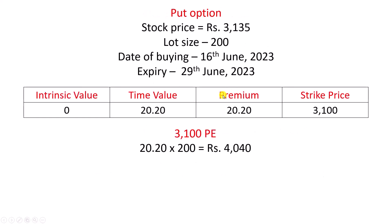Now let me move to the second case, which is put option. Same stock price, same lot size, same date of buying, same expiry. But this time, the strike price is 3100 rupees. The premium is 20.20. I am an option buyer and I have bought the 3100 PE put option. My expectation is that the price of the stock will move below 3100 rupees. To buy one lot, I have paid premium into lot size, which is 4040 rupees.